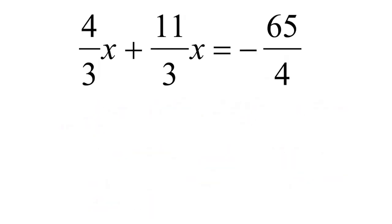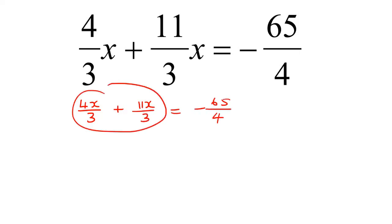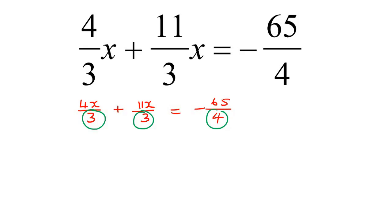Here is our last example for this lesson. Let's make everything more comfortable: 4x over 3, then 11x over 3, then minus 65 over 4. You can combine those first two together if you want, but I'm keeping it in the same structured format. So we look at the denominators and find a common denominator — that could be 12, so LCD is 12.